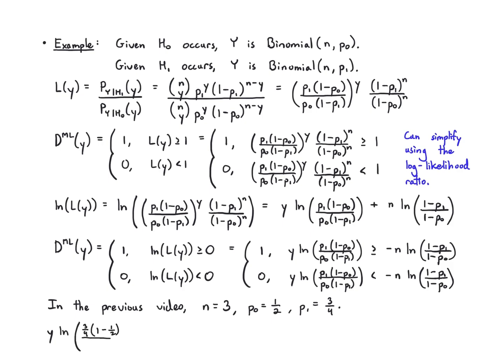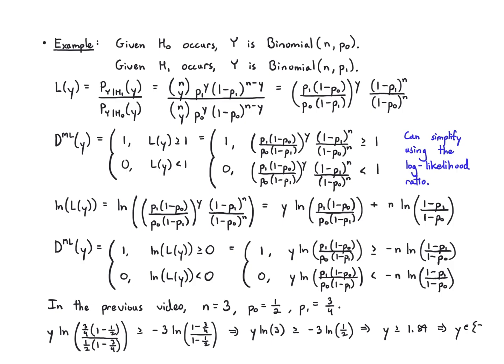Plugging in gives Y times log of 3 being compared to minus 3 log of 1/2. If you work all this out, you get Y being compared to 1.89, which means when Y is 2 or 3, we decide H1. This turns out to be the same decision rule we arrived at using the table in that previous video. So here in one expression we recover that rule, but it works for any binomial n, P0, and P1 — whereas before we had to work out every entry in the table.